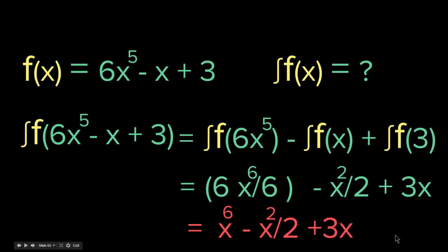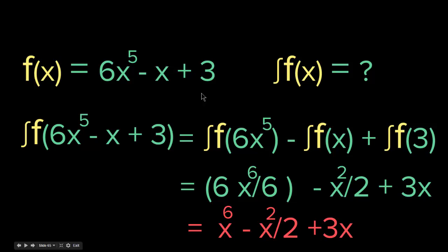If you want to make sure that this is actually the integration, try to find the derivative of this function. When you find the derivative, it becomes 6x to the 5 minus 2x over 2 plus 3, which simplifies to 6x to the 5 minus x plus 3 — just like we have it in the original function. So as you can see, we did the integration correctly. The integral of 6x to the 5 minus x plus 3 is x to the 6 minus x squared over 2 plus 3x, plus constant.